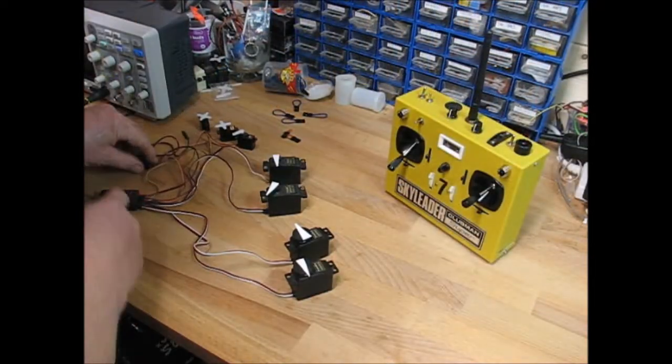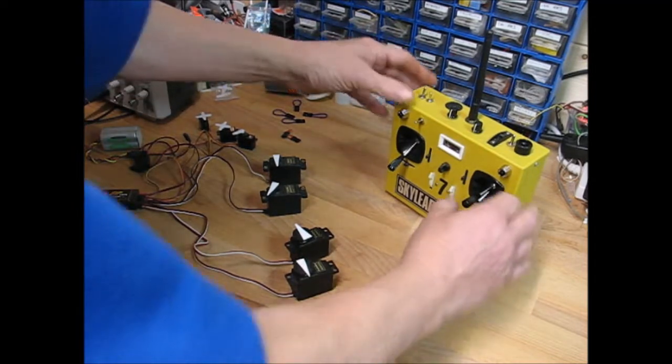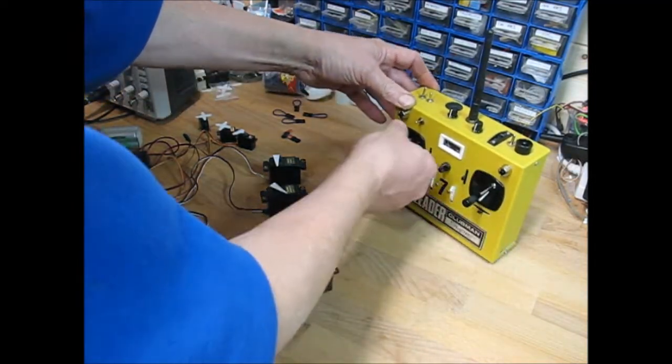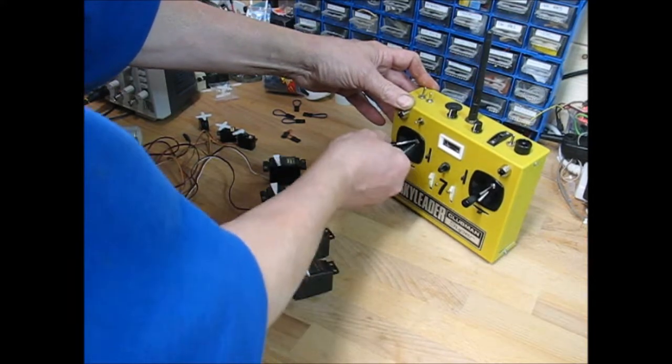Now receiver. We've got a V8FR set up here. So we've got aileron, elevator, throttle, rudder.